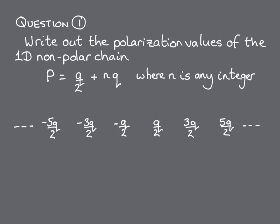We can notice two things about our list of numbers. First, that they are equally spaced, with each neighbouring pair separated by the polarisation quantum, q.